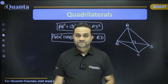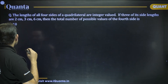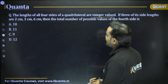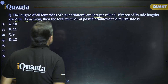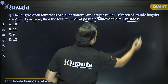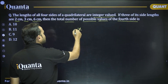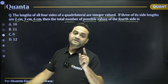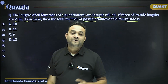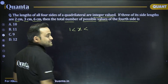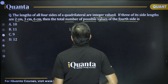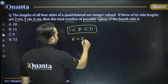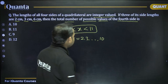First question: the lengths of all four sides of a quadrilateral are integer-valued. If three of its side lengths are 2 cm, 3 cm, and 6 cm, find the total number of possible values of the fourth side x. We know x must be greater than the minimum absolute difference: |2−3|=1, |3−6|=3, |6−2|=4, so minimum is 1. Also x must be less than 2+3+6=11. So x is greater than 1 and less than 11.